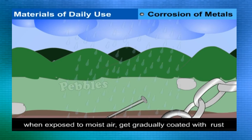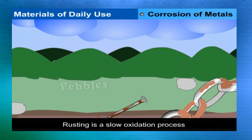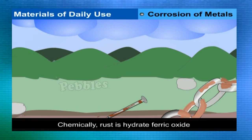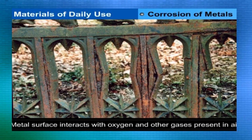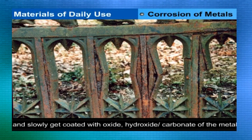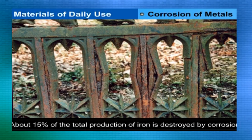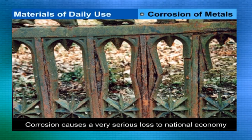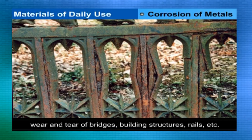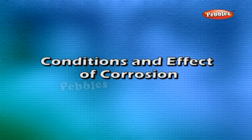Corrosion of metals: iron articles exposed to moist air get coated with a reddish-brown coating called rust. Rusting is a slow oxidation process; chemically, rust is hydrated ferric oxide. Metal surfaces interact with oxygen, moisture, and other gases in air and get coated with oxides, hydroxides, or carbonates — thus metals are corroded. Corrosion causes great economic loss; about 15% of the world's iron production is destroyed by corrosion.